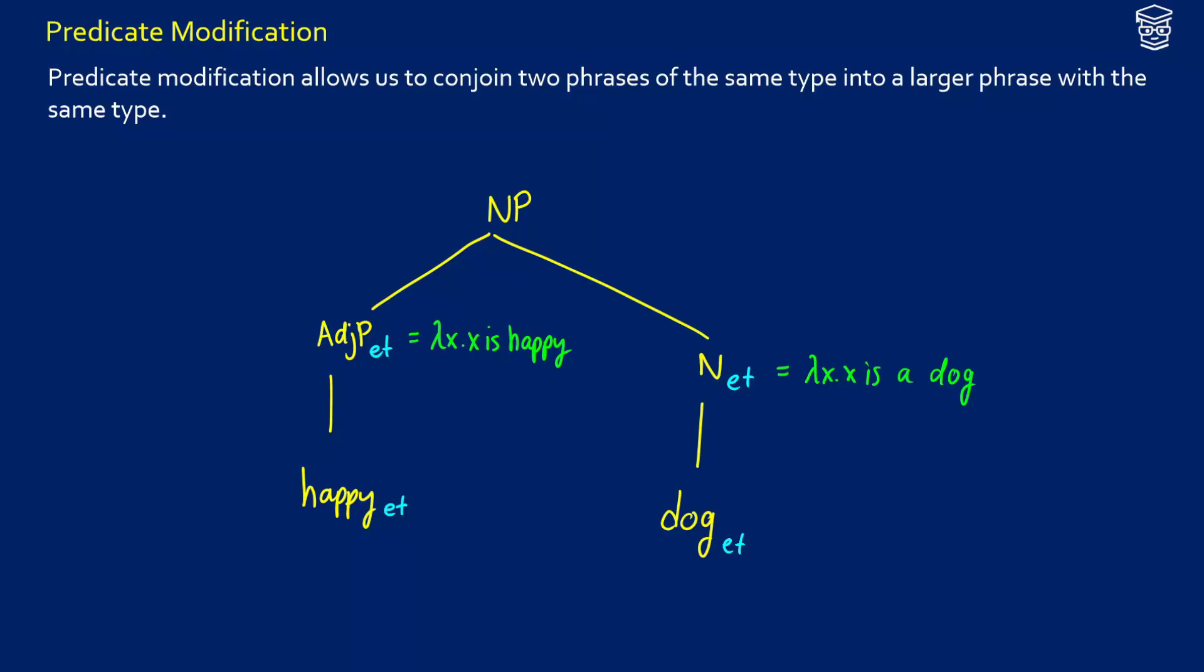In the last video on intersective adjectives, we learned how we can do some type shifting in order to get the appropriate meaning, because what we had in the case of happy dog is the case where we have an ET conjoining with another ET, and that gives us a type clash.